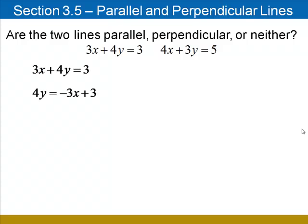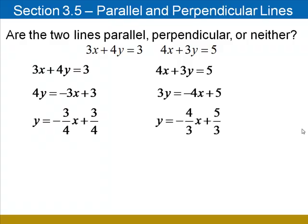For the first line, subtract 3x and divide by 4. The slope of that line is negative 3 fourths. For the second line, subtract 4x and divide by 3. Its slope is negative 4 thirds.